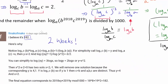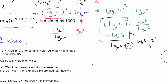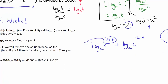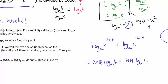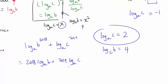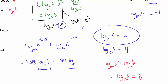Now we want to find log base a of (b^2018 · c^2019), which splits as 2018·log base a of b + 2019·log base a of c. We know log base a of c = 2, so we need log base a of b. By the chain rule for logarithms, log base a of c times log base c of b = log base a of b, which equals 2 × 4 = 8.